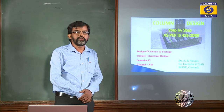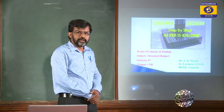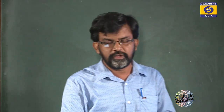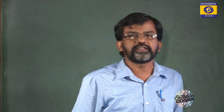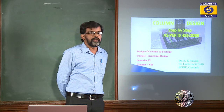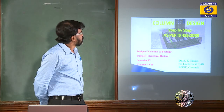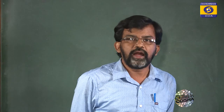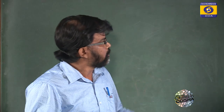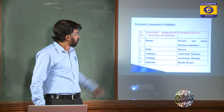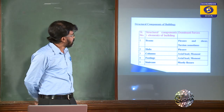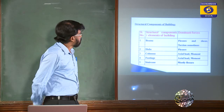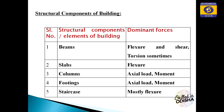Going straight to the chapter: we have already learned quite a lot of structural elements in structural engineering, and column design is the last chapter of Structural Design One. I would like to first explain the different structural components you will see in a building: beam, slab, columns, footings, and staircases.